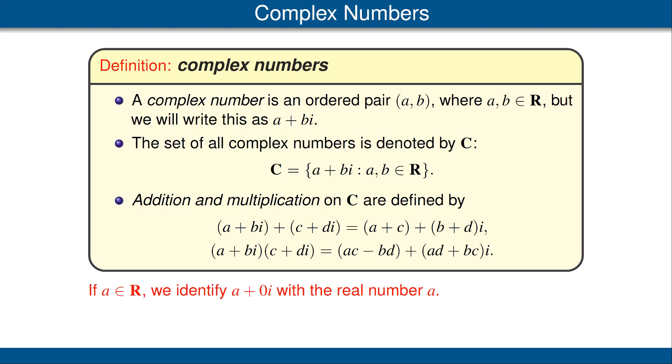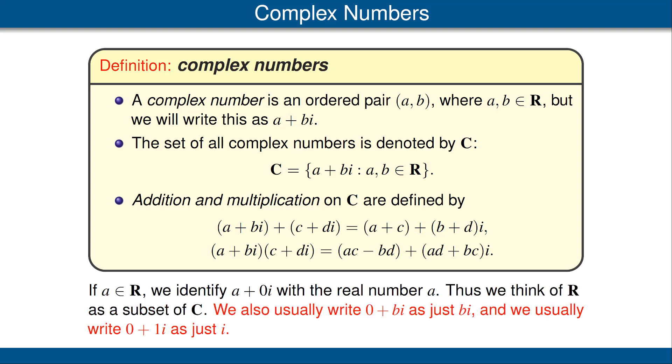We can think of a real number a as the same as the complex number a + 0i. Thus, we think of the real numbers as a subset of the complex numbers. We also usually write 0 + bi as just bi. Finally, we usually write 0 + 1i as just i, completing a rigorous definition of i.